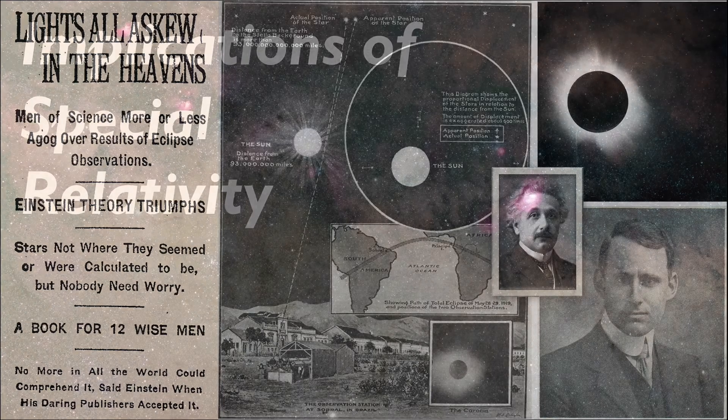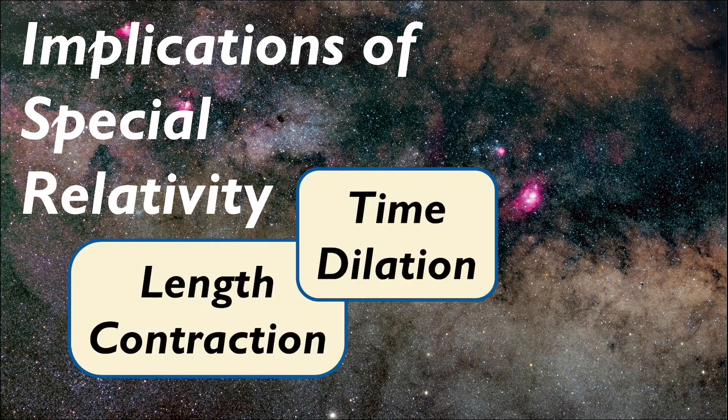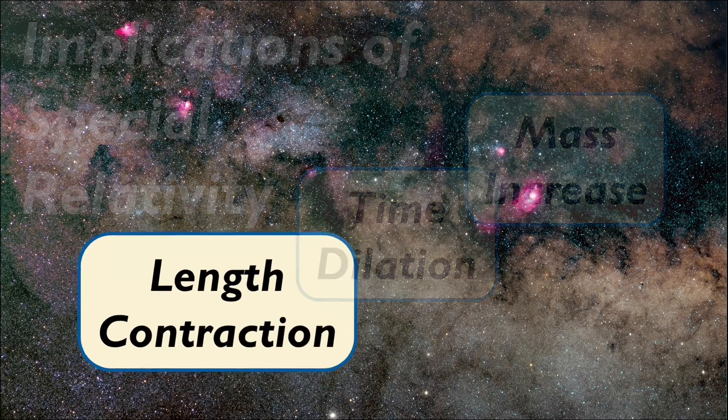Now, the three main implications of special relativity that we'll focus on are length contraction, time dilation, and the relativistic illusion of mass increase. But first, let's talk about length contraction.